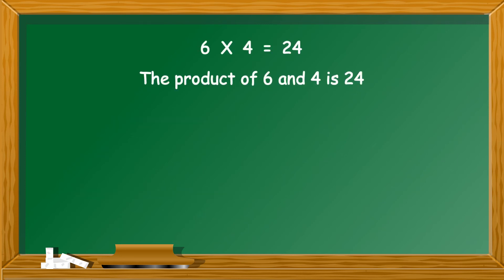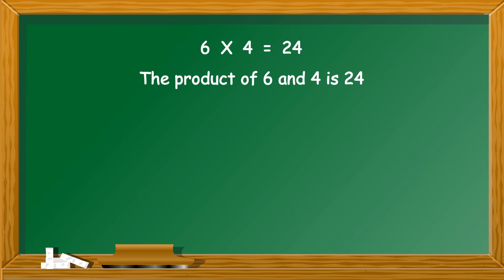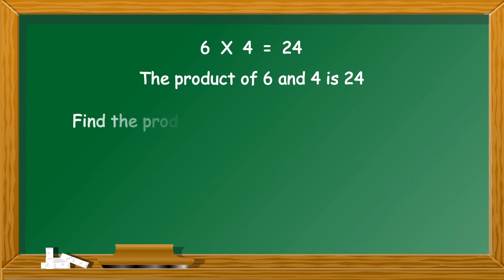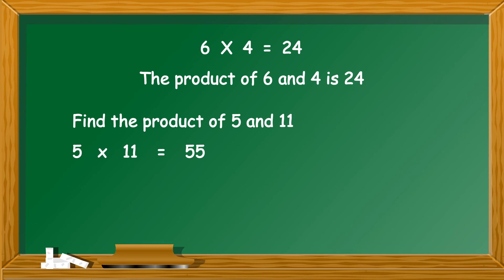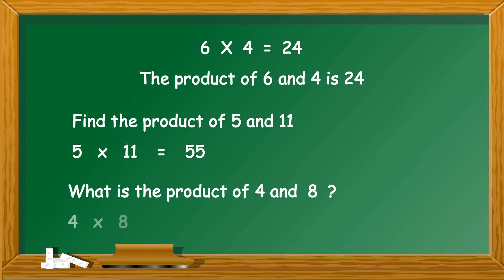One more method of reading multiplication is: the product of 6 and 4 is 24. Whenever you see the term 'product' in the question, you should know that you have to multiply the given numbers. For example, find the product of 5 and 11 — multiply 5 into 11, which is equal to 55. Or, if the question is: what is the product of 4 and 8? Multiply 4 into 8, which is equal to 32.